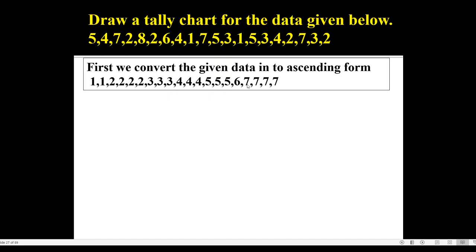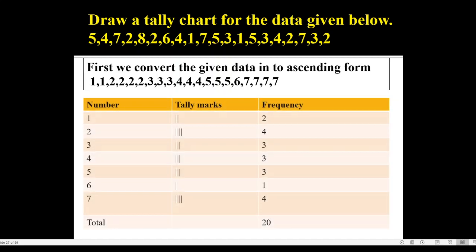Here I have written all the numbers in smallest to largest form. Then we prepare a discrete frequency distribution. The distinct values present are 1, 2, 3, 4, 5, 6, and 7. I have written these numbers in the table.